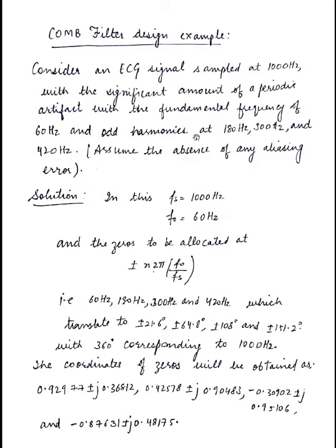So odd harmonics means it will have at n equal to 3, n equal to 5, n equal to 7, that corresponds to frequencies 180 Hz, 300 Hz, and 420 Hz, and we're assuming there is no aliasing error.